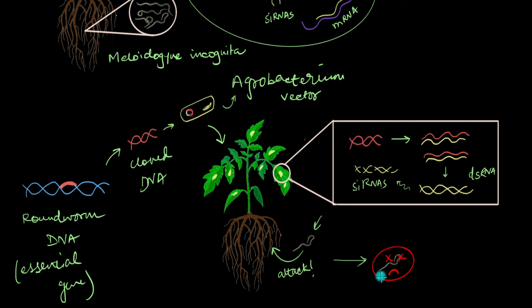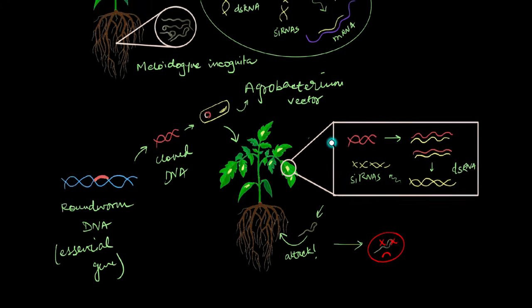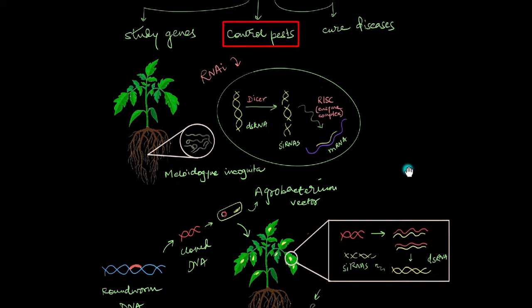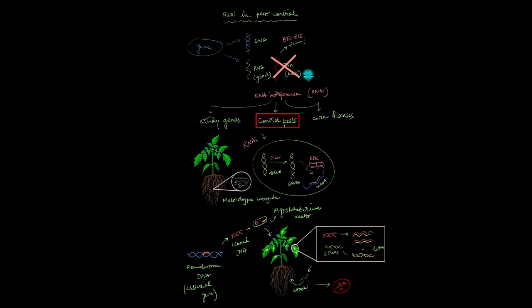And that is how RNAi or RNA interference eventually became a huge deal, became so revolutionary in tackling this extremely major problem. This is how RNAi or RNA interference became such a revolutionary thing in the world of agriculture where you can now not just study genes or cure diseases, but you can also control pests in this exact same way. This is how RNAi interference can help in controlling pests.